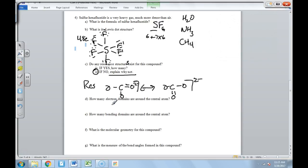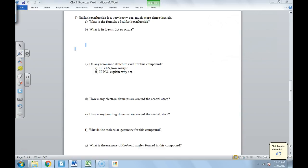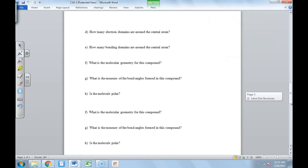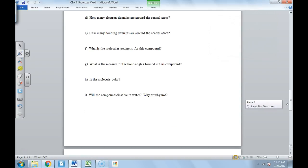How many electron domains are around the central atom? There's six. How many of them are bonding? There are six. What is the molecular geometry? Molecular geometry is determined by the number of electron domains and the number of bonding domains. So six is octahedral.